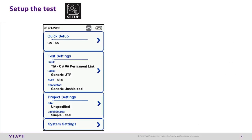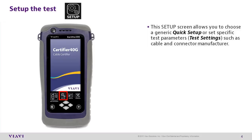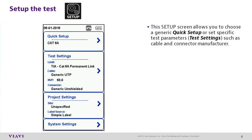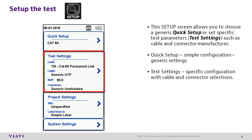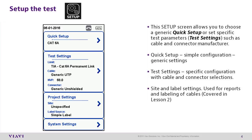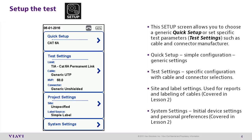Test Setup. Pressing the Setup hard key allows you to access test setting options. There are two basic options: Quick Setup and Test Settings. Quick Setup is a simple configuration with generic settings, while Test Settings allows for specific configuration of cables and connectors being tested. Project Settings and System Settings allow you to set the site and label settings used for test reports, and initial device settings and personal preferences — both covered in detail in Lesson 2.